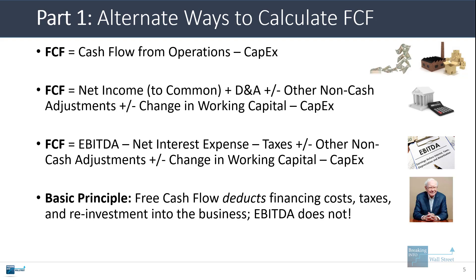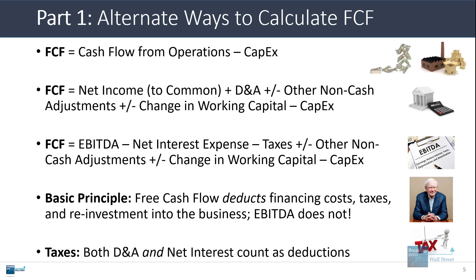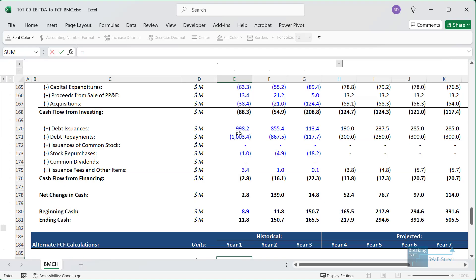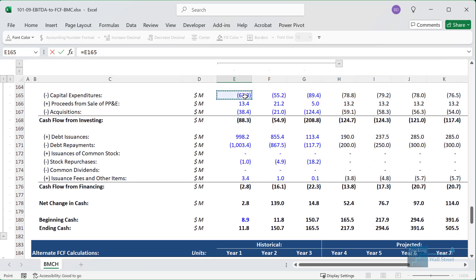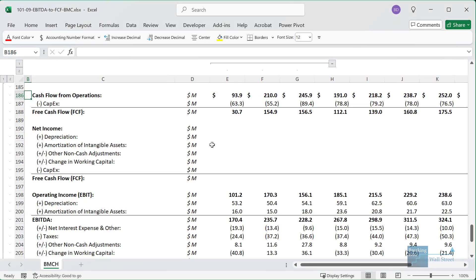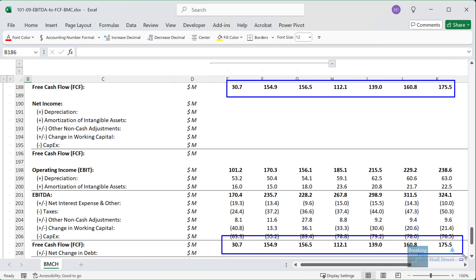The most important principle is that free cash flow should always deduct the company's financing costs, taxes, and reinvestment into the business in the form of the change of working capital and CapEx. EBITDA does not deduct any of those. If you understand this basic principle, you should always be able to calculate free cash flow from EBITDA or any other metric. The most traditional calculation is cash flow from operations minus CapEx. I'll calculate it that way first, sum it up, and copy it across — you can see it matches exactly when we calculate free cash flow starting with EBITDA.